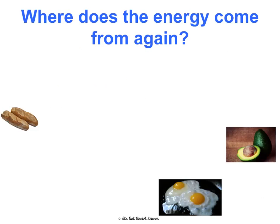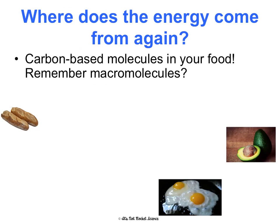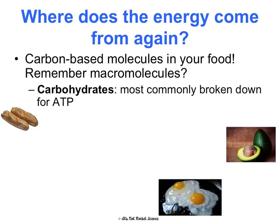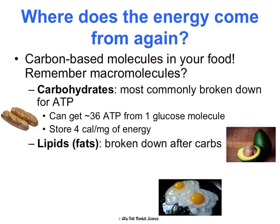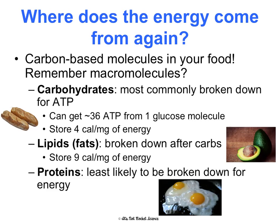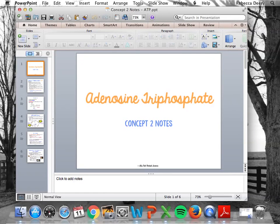Where does that energy come from? It comes from carbon-based molecules in your food broken down during cellular respiration. Remember your macromolecules: carbohydrates are the number one energy source, most commonly broken down for ATP — we can get about 36 ATP from one glucose molecule, storing about four calories per milligram. We can also break down lipids or fats as a second choice, storing about nine calories per milligram. And if we have to, we can break down proteins too, which also store four calories of energy per milligram.